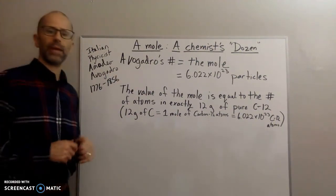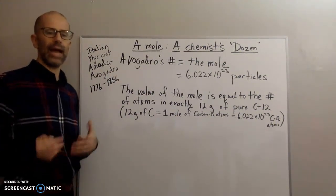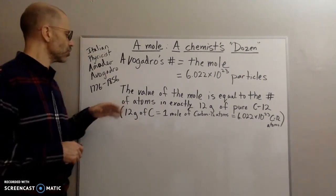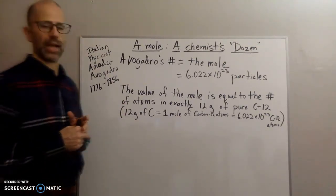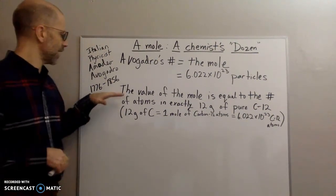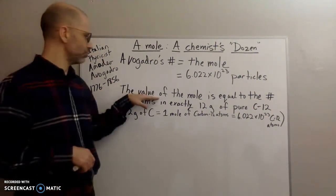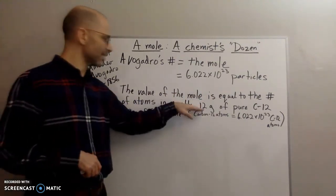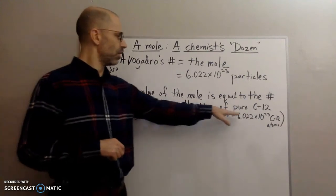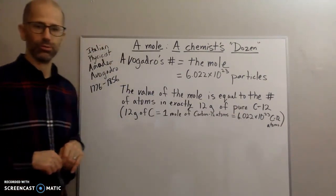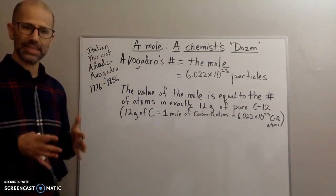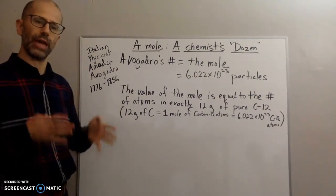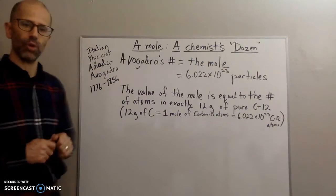The second thing to keep in mind is that the mole actually specifies something particular. The specific understanding of a mole is that the mole is the value that is equal to the number of atoms in exactly 12 grams of pure carbon 12. That's the specific definition or understanding of mole. It's referring to a particular number of those atoms.